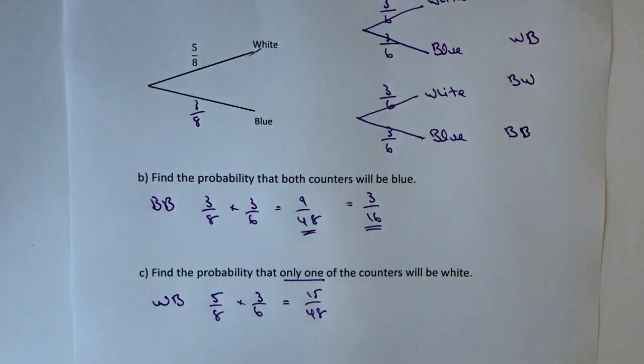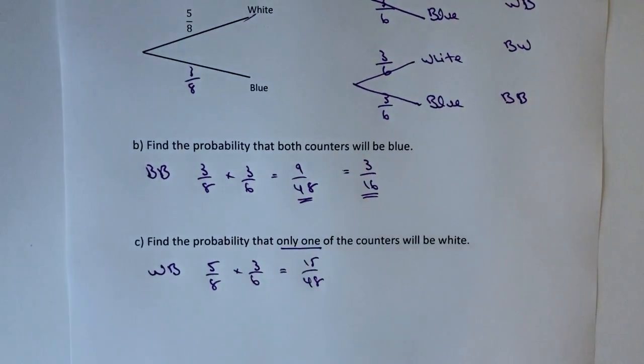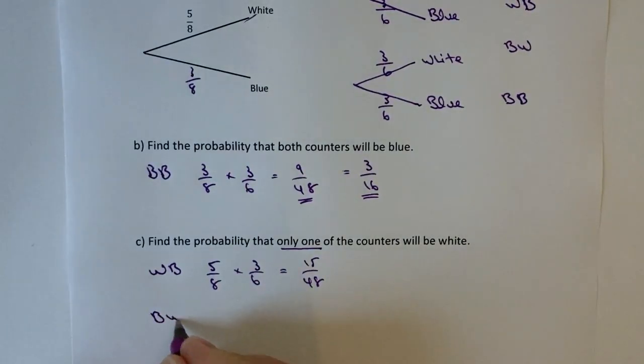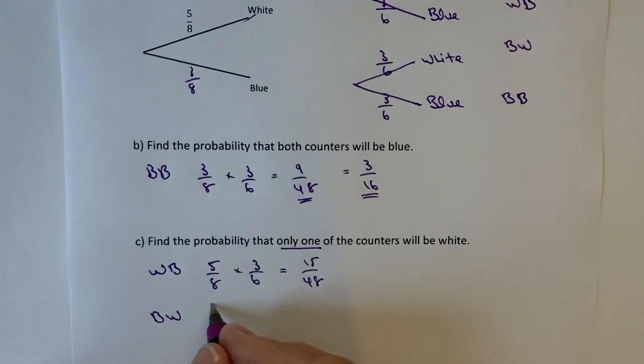Let's have a look at blue white. Blue first bag is three eighths and the second bag is three sixths. Multiply that together we're going to get nine forty-eight.